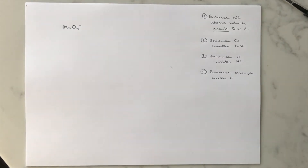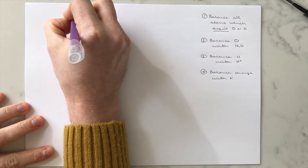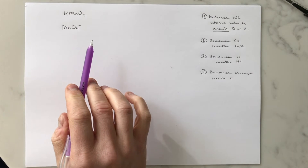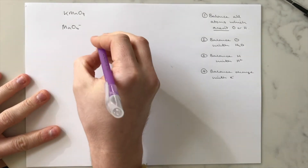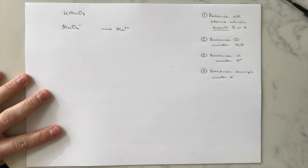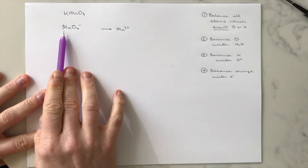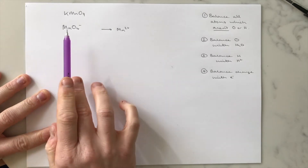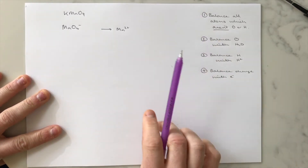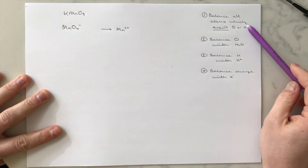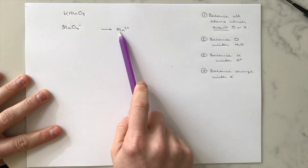The first key example is the reaction of manganate ions. Manganate is usually found in the form of potassium manganate, KMnO₄, but we ignore the potassium and focus on the manganate ion it releases. The manganate will undergo a reaction to produce Mn²⁺ ions — manganese goes from +7 down to a +2 oxidation state. We need to construct this as a balanced half equation. Step one: balance all atoms which aren't oxygen or hydrogen. We've got one manganese on each side, so that's already done.